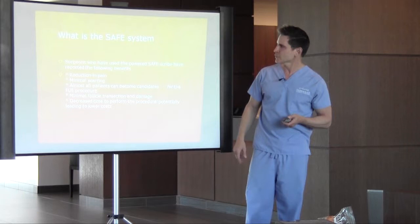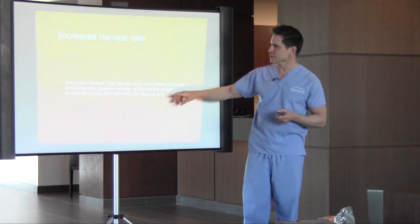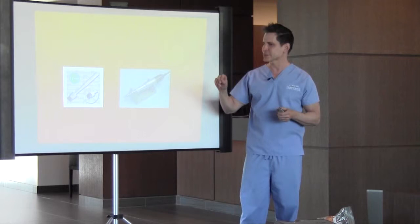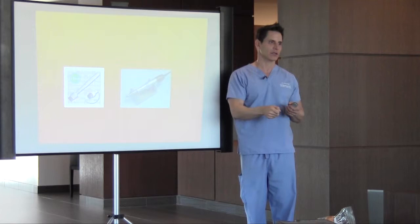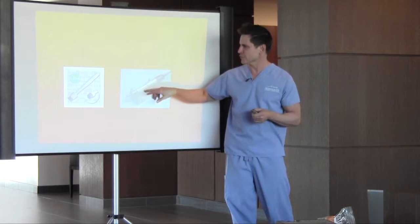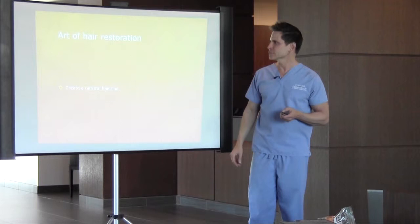The SAFE system is a mechanical vibrating device we use to harvest hairs. Instead of rotating fast and hard, it vibrates and scoots along the hair follicle — less like chopping with a cleaver and more like vibrating through — so it's less likely to damage the hair follicles. Because it's motorized, you can harvest hair at a faster rate.